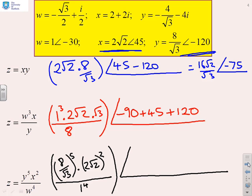What about the phase? Well, I get 5 lots of the phase of y. The phase of y is minus 120, so 5 lots of that is minus 600. I get 2 lots of the phase of x, so that's plus 90. And I subtract 4 lots of w, so that's going to be plus 120. And again, I'll let you add those together to simplify, because that's easy to do.